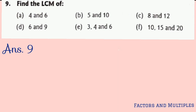Question number 9: find the LCM. This question has 6 parts; for each part, a set of numbers is given. We will write their multiples and find at least 2 common multiples, from which we identify the least common multiple.